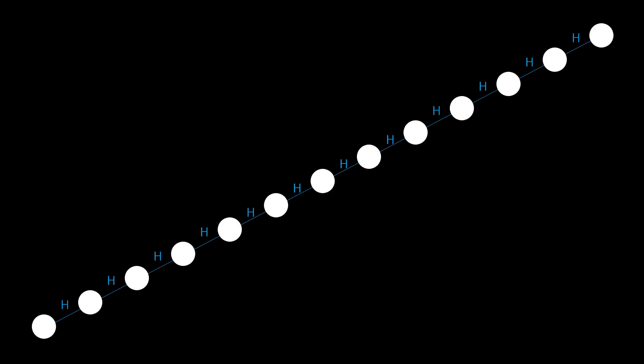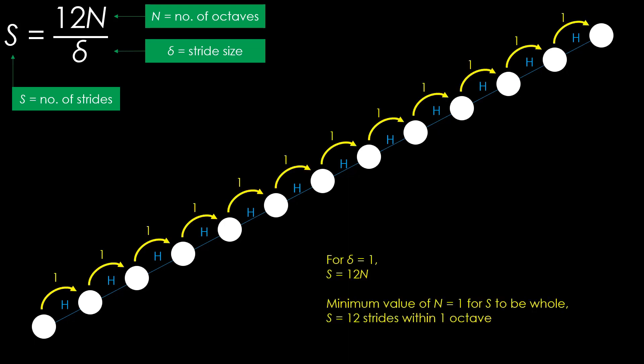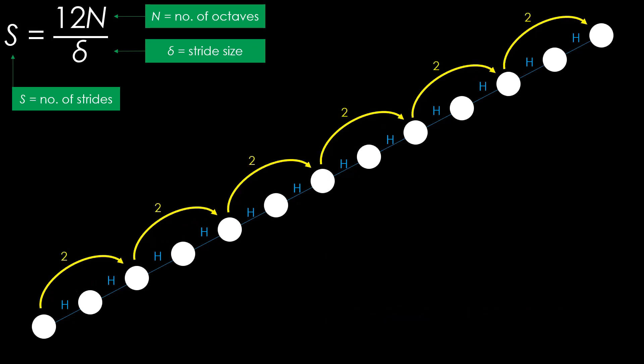We don't get the same consequence for the chromatic scale, which has 12 intervals. Using the same thought process, the expression for the number of strides would be this. Trivially, it takes a minimum of 12 steps to reach the starting note if the stride size is just 1. For a stride size of 2, s equals 6n. With n taking the minimum value of 1, it takes only 6 strides to reach the starting note.